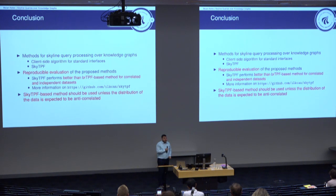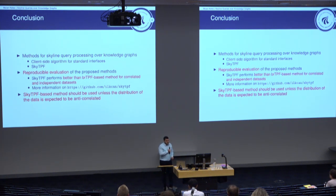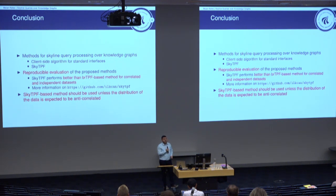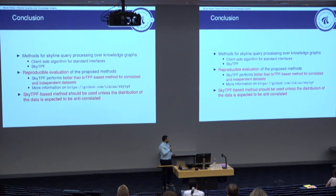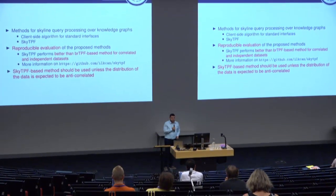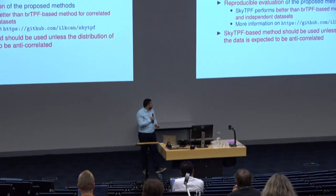In conclusion, we proposed methods for skyline query processing over knowledge graphs: a client-side algorithm and a SkyTPF interface. We presented a reproducible evaluation. SkyTPF performs better than the BRTPF-based method for correlated and independent datasets. You can find more information on our GitHub page. The main message is that the SkyTPF-based method should be used unless you expect the distribution to be anti-correlated.